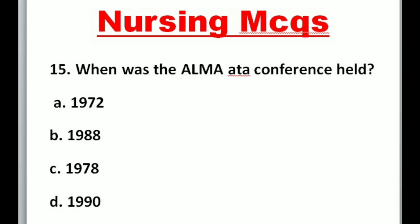Question 15: When was the Alma Ata conference held? A. 1972, B. 1988, C. 1978, D. 1990. Correct option is C: 1978.